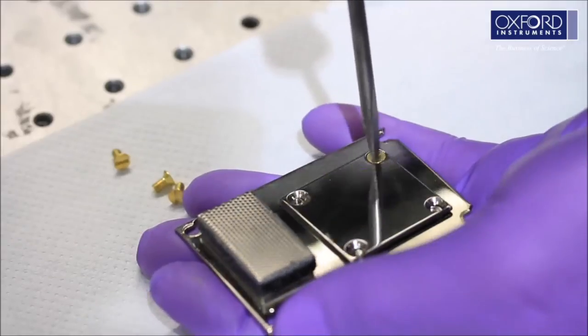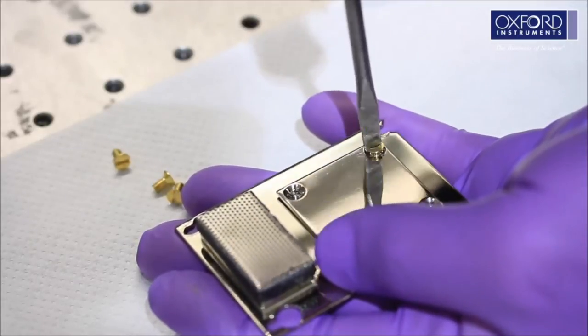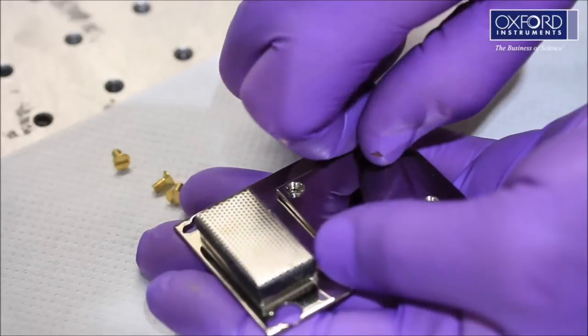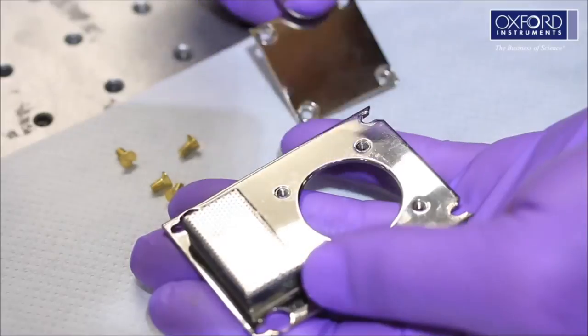Remove the radiation shield window blank from the radiation shield to provide optical access. In this case, we are removing the radiation shield window blank from the radiation shield plate.